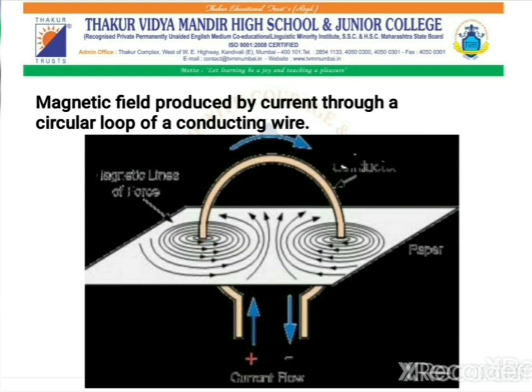As we go away from the wire, the concentric circles representing the magnetic lines of force become bigger and bigger. And as we go towards the center of the loop, the circles become so big that their radius can be shown as a straight line. By making use of the right-hand thumb rule, we can find out that every point of the loop contributes magnetic lines of force at the center of the loop, all in the same direction.